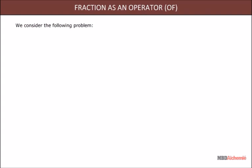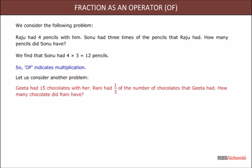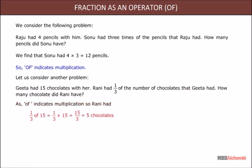Consider the following problem: Raju had 4 pencils. Sonu had 3 times the pencils that Raju had. How many pencils did Sonu have? Sonu had 12 pencils — the number 4 was multiplied by 3, so 'of' indicates multiplication. Another problem: Geeta had 15 chocolates. Rani had 1/3 of the number of chocolates Geeta had. Since 'of' indicates multiplication, Rani had 1/3 of 15 = 15/3 = 5 chocolates. Similarly, half of 10 = 1/2 × 10 = 5, and 1/4 of 20 = 1/4 × 20 = 5.